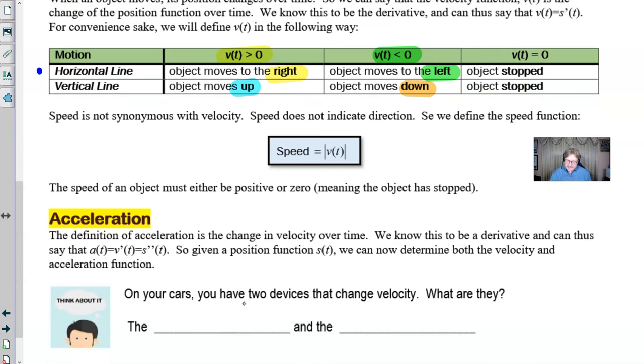Finally, we got this idea of acceleration. The definition of acceleration is the change in velocity over the change in time. That's important. We know this to be a derivative, and we can thus say that a is the first derivative of v or the second derivative of position, something that we talked about in topic 3.6. So given a position function s(t), we can now determine both velocity and acceleration.